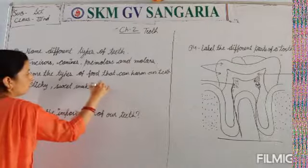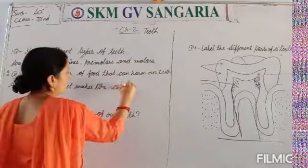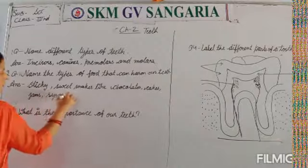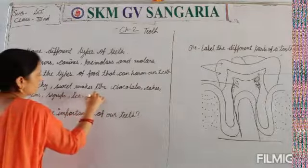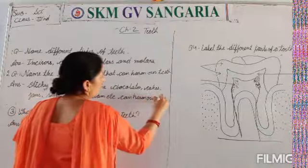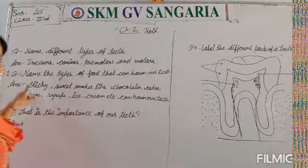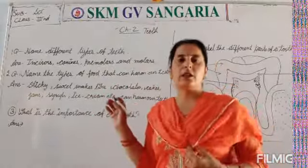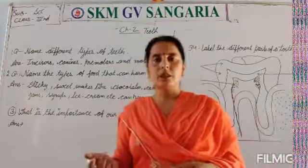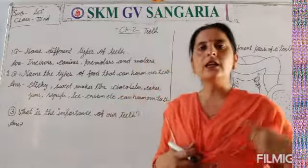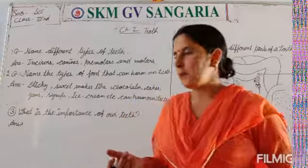Sticky sweet snacks like chocolates, cakes, jams, ice cream, etc. can harm our teeth. We should not eat them in large quantities. You can eat them, but you should not eat too much because they are bad for our teeth.